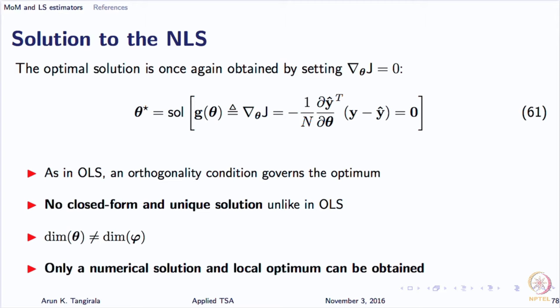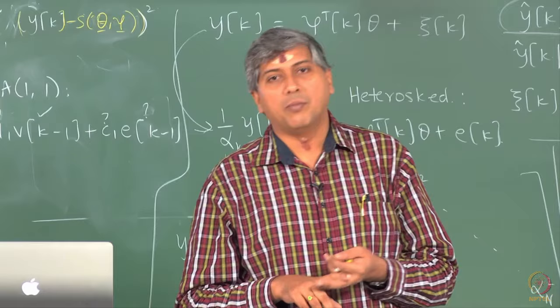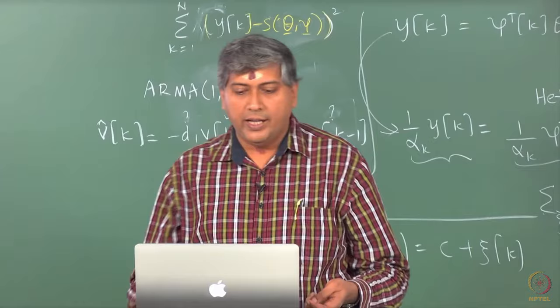In the linear case, that gradient is the regressor psi, which is independent of theta — therefore I get a bunch of linear equations. The difficulty lies with this gradient in the non-linear case. The solution to non-linear least squares uses standard methods like Newton-Raphson, Gauss-Newton, modified Gauss-Newton, or Levenberg-Marquardt. All of them are iterative algorithms. They start with an initial guess and refine the parameters. The generic update equation is: theta(i+1) = theta(i) minus eta times some direction vector.